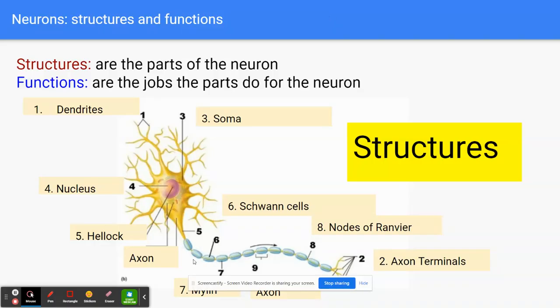All right students, today's lesson we are going to focus on the neuron, and we're going to specifically focus on taking notes about the structures — which are the parts of the neuron — and the functions — which are the jobs that those parts do in the neuron itself. Here's a diagram of all the parts.